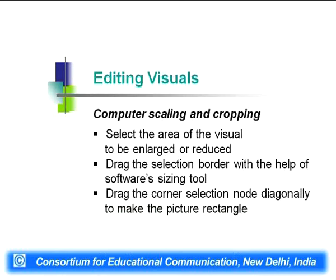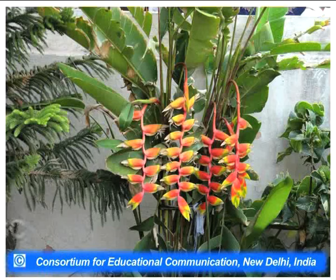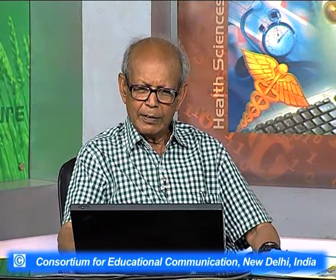This can also be done on computer. In a computer, to scale and crop, select the area of the visual to be enlarged or reduced. Drag the selection border with the help of the software's sizing tool. Then drag the corner of the selection node diagonally to keep the picture in proportion — dragging from the middle node instead of the corner will distort the image.